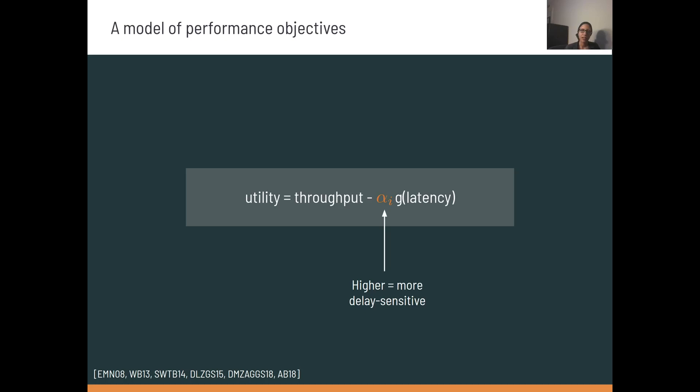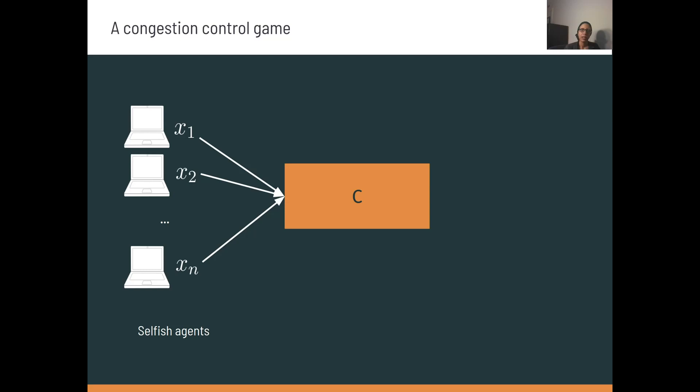Since we are concerned about latency-sensitive senders, here, each sender controls its latency sensitivity by this one parameter, alpha-i. So all senders have the same utility function except for this value of alpha-i, and higher values of alpha-i imply a sender that is more sensitive to delay increasing. So here, i indexes the sender.